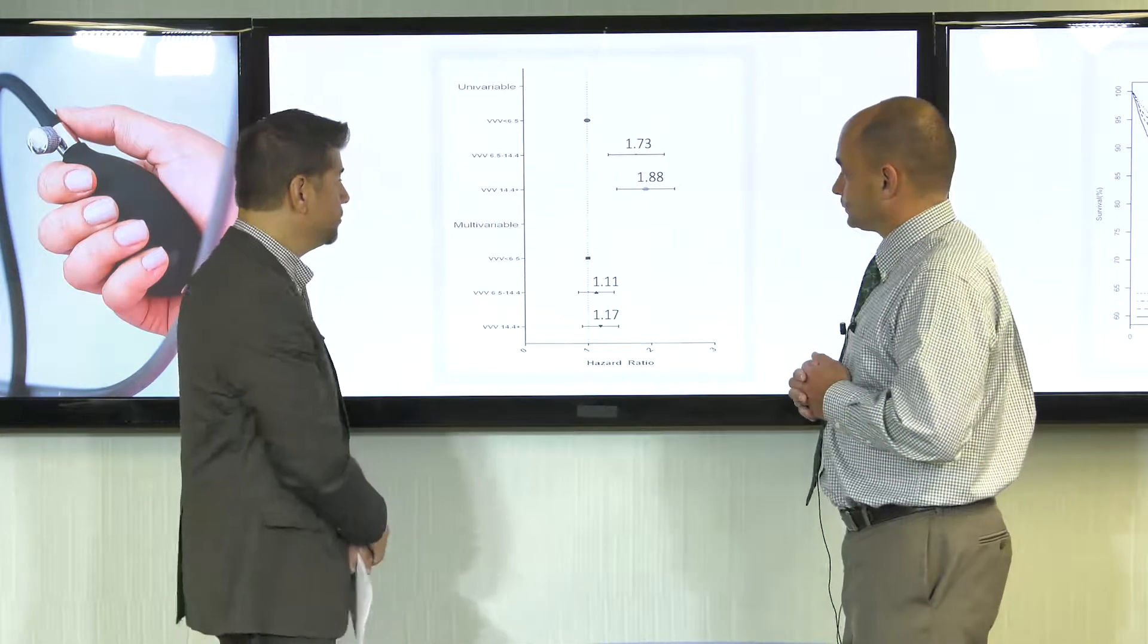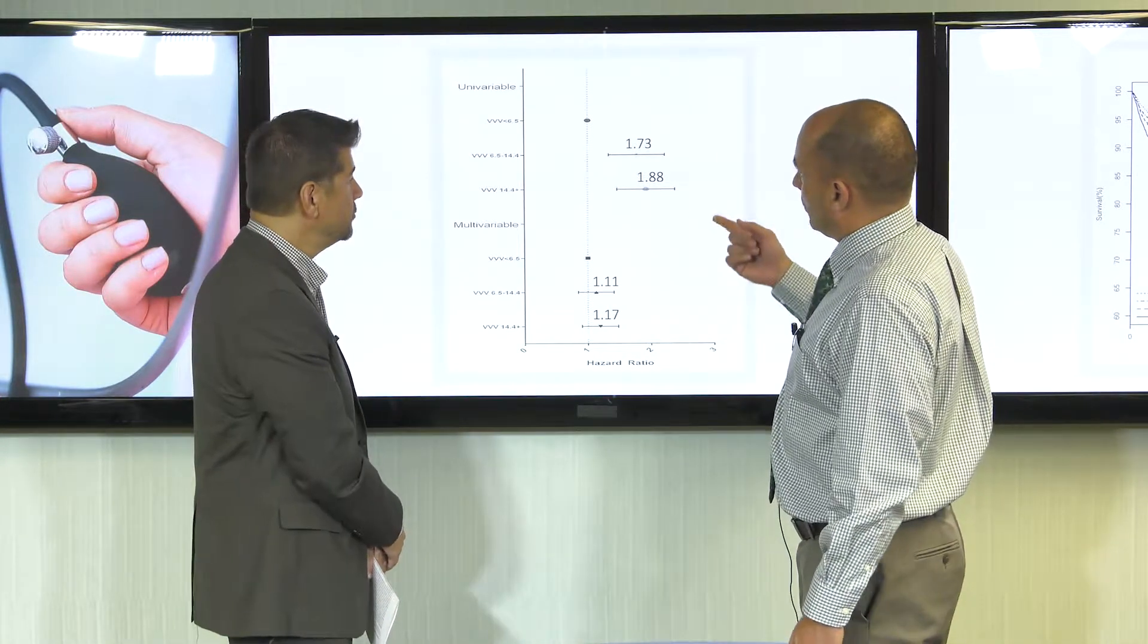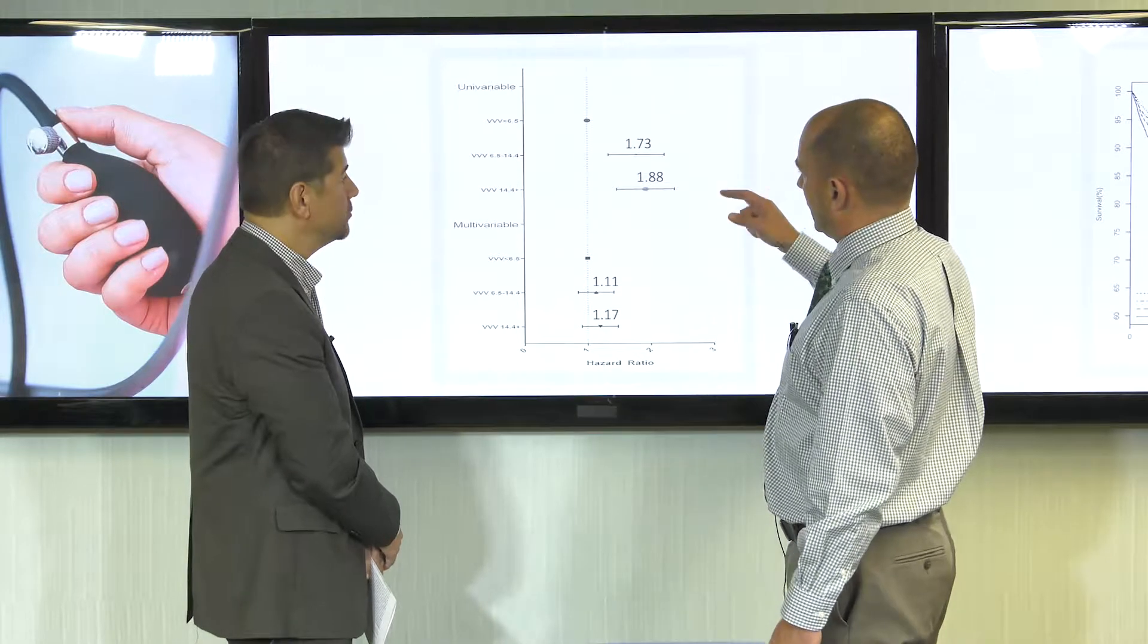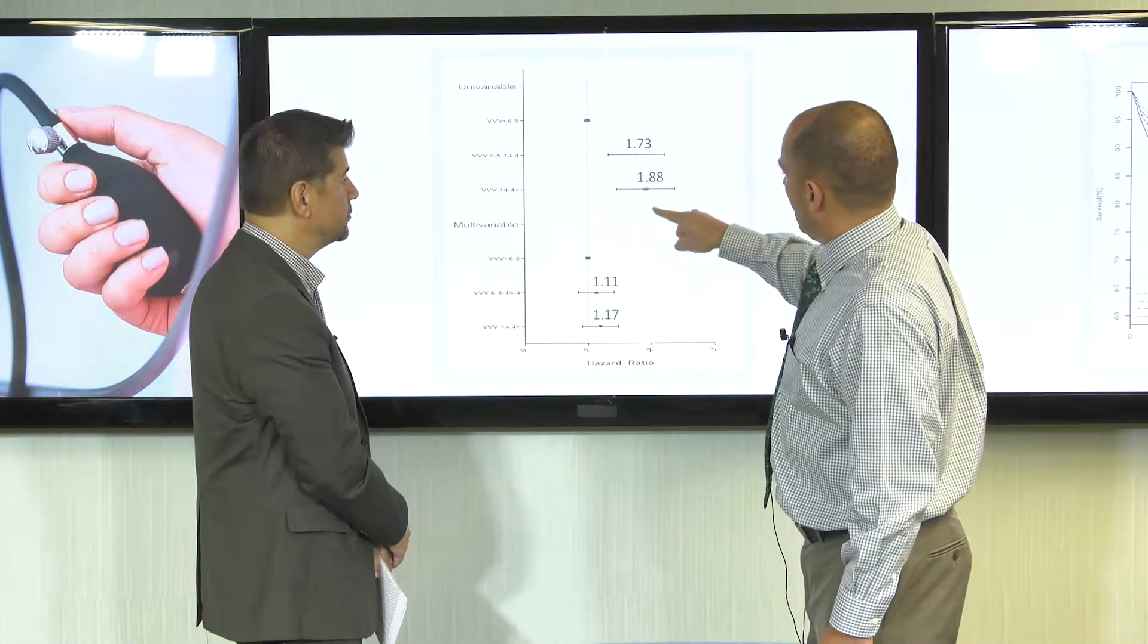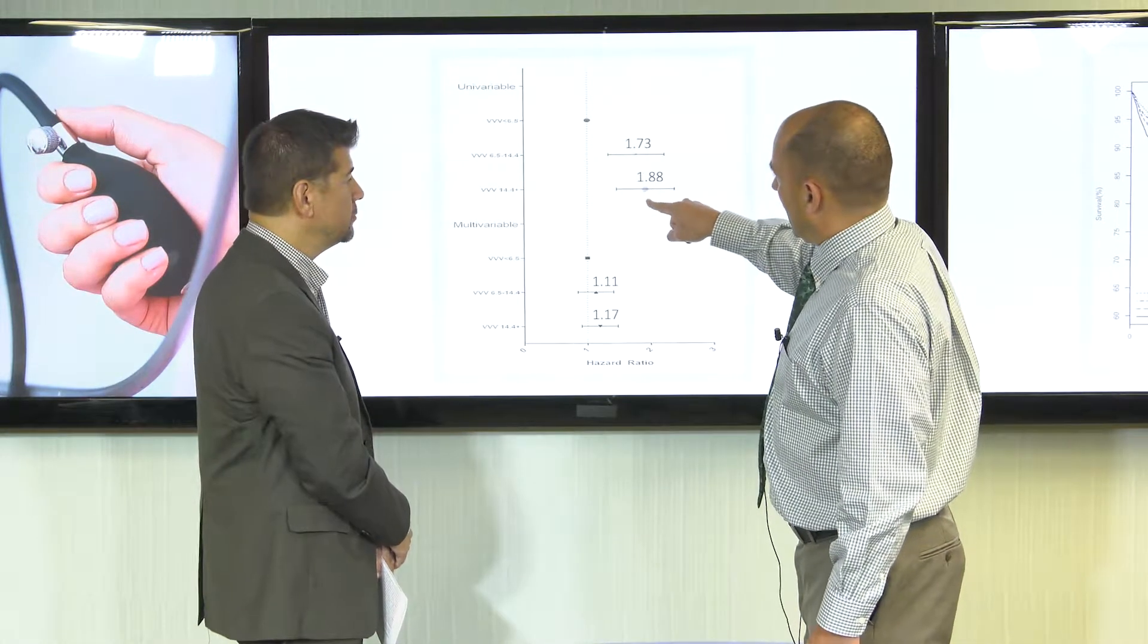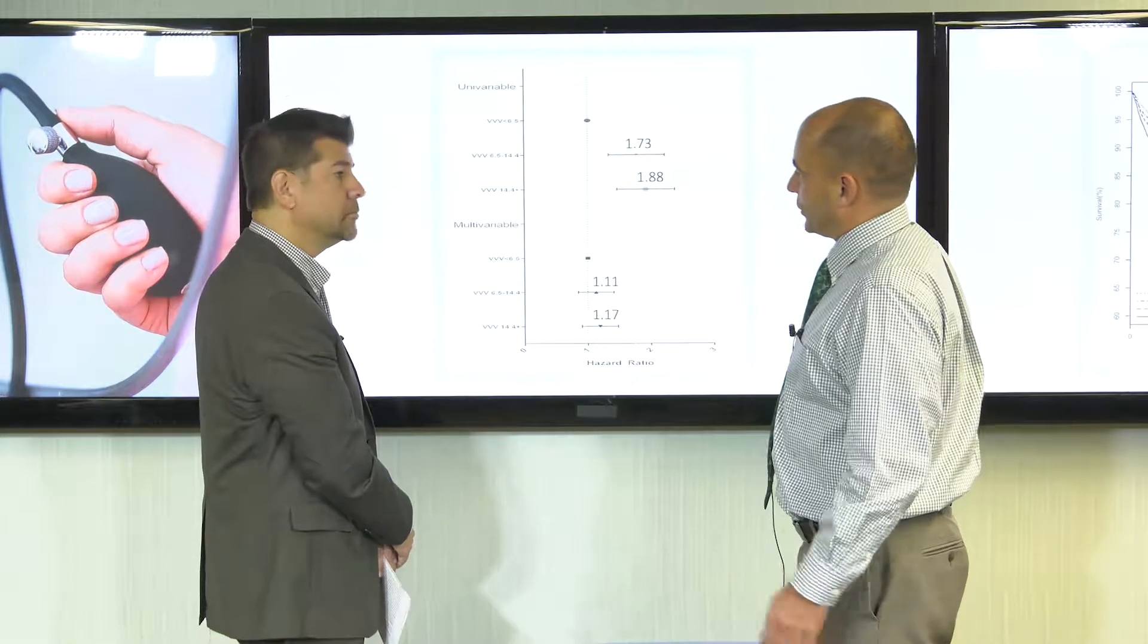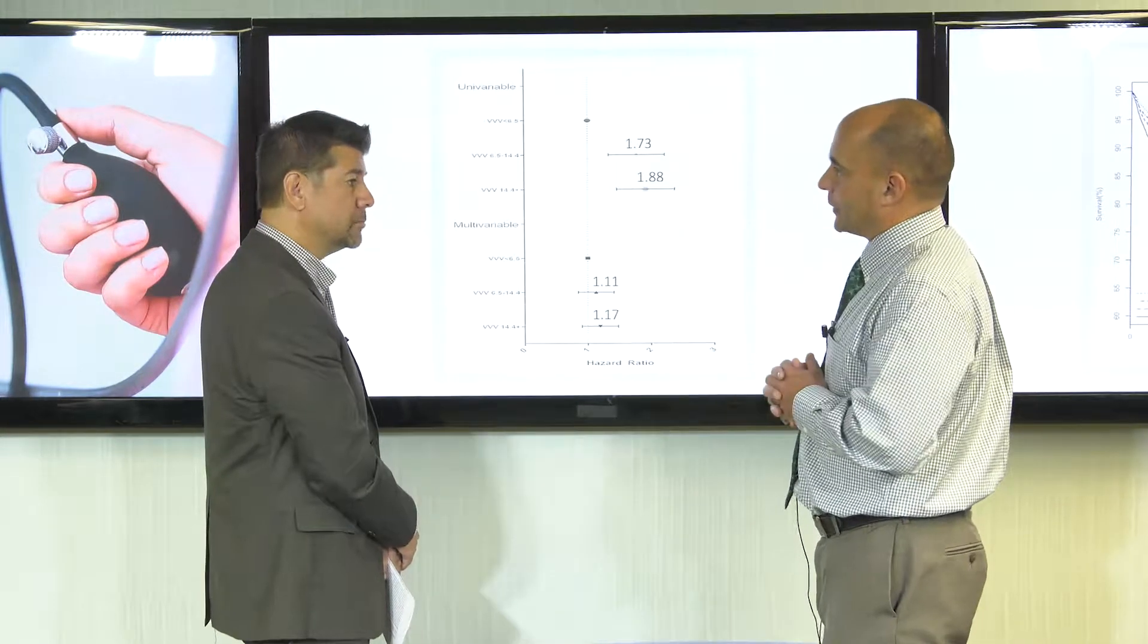Tell us what we're seeing here. This is the univariable analysis of visit-to-visit variability in our database. If you look at this univariable analysis, it showed that there was some significance if the systolic blood pressure was more than 14.4 varying from time to time.